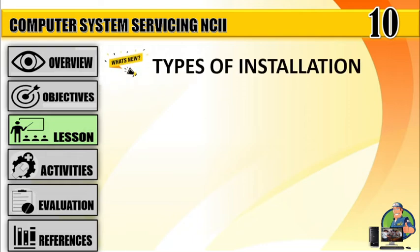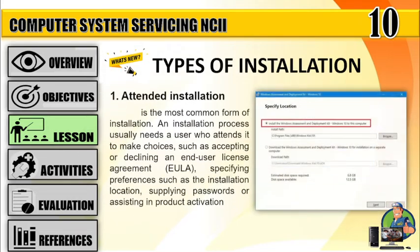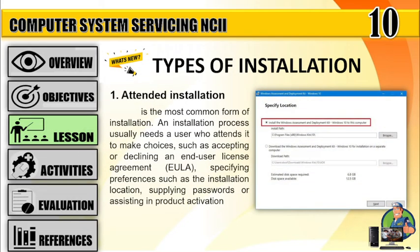What's New — Types of Installation. Number 1: Attended installation is the most common form of installation. An installation process usually needs a user who attends it to make choices, such as accepting or declining an end-user license agreement (EULA), specifying preferences such as the installation location, supplying passwords, or assisting in product activation.